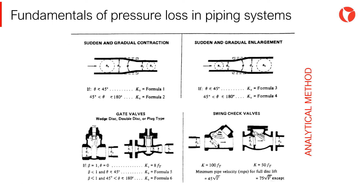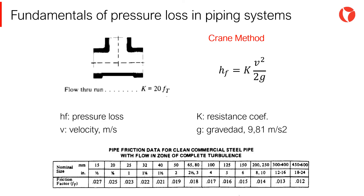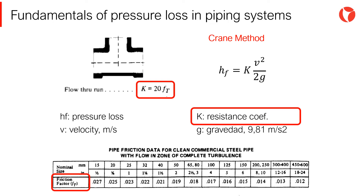Once the pressure loss in straight pipe runs has been determined, the pressure loss in fittings must be calculated depending on the system configuration. One of the most used methods to determine the pressure loss in fittings is the analytical method developed by Crane. Based on numerous laboratory trials and geometric likeliness of different fittings, this method establishes the friction factor for different sizes of new commercial piping, from which a resistance coefficient for each fitting can be obtained. Combined with Darcy's equation, this yields the pressure loss of the fitting. The great advantage of this method lies within the programming possibilities, saving a considerable amount of time.